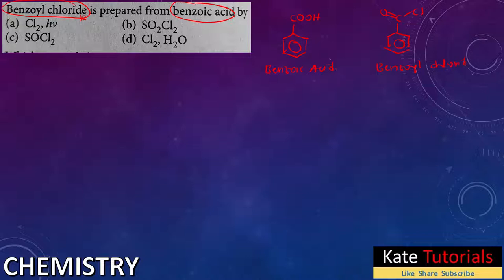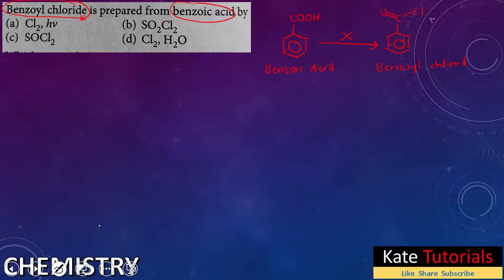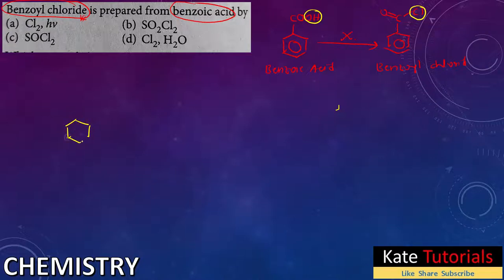Now I want to prepare this benzoyl chloride from benzoic acid. What should reagent X be? This is one of the easiest questions — I should remove the -OH and put -Cl there, so it is done using this.